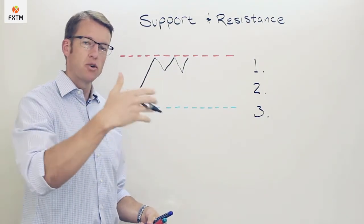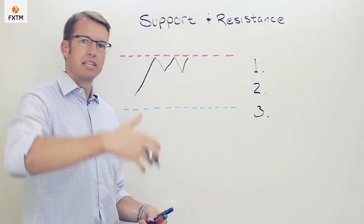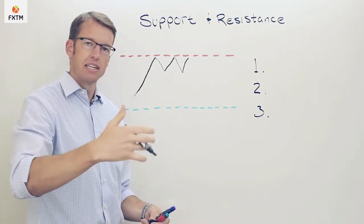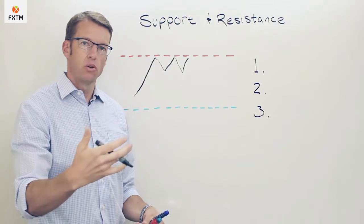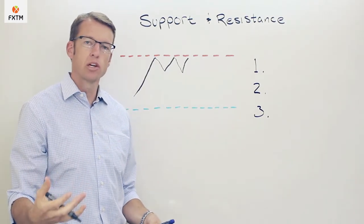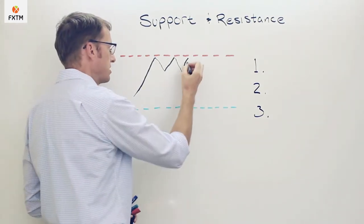If there is a particular price level the currency pair continues to reach or approach and then it fails again and fails again and fails again, it's more likely to continue to hold in the future.